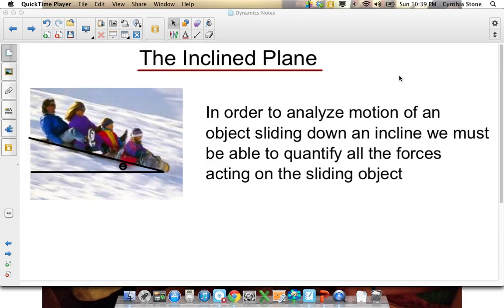In the dynamics unit of university prep physics, we're looking at something called the inclined plane. All that means is we're looking at the motion of objects sliding down an incline, whether it be a hill like these tobogganers, or a ramp, something like that.